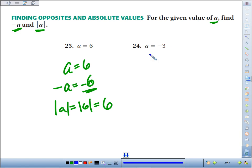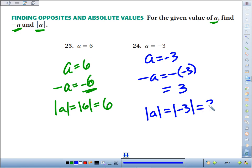Now number 24, we've got A is negative 3. If we find the opposite of A, we're finding the opposite of negative 3, which would turn into a positive 3. The absolute value of A would be the absolute value of negative 3, and how far away from 0 is negative 3? The answer is 3 units away.